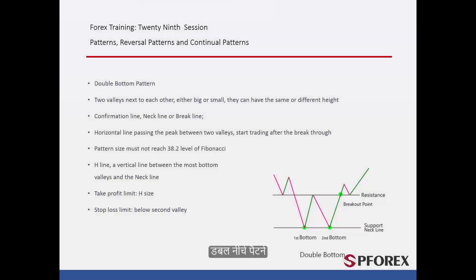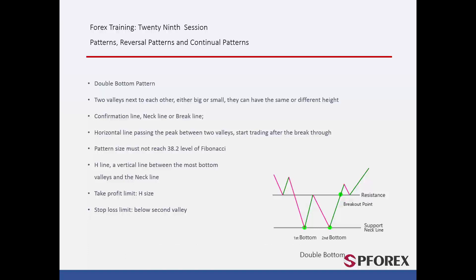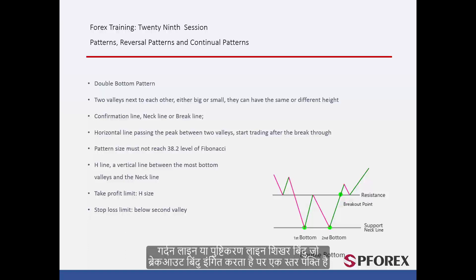Double Bottom Pattern: On a downward trend, a double bottom pattern is formed by two consecutive valleys with different or the same height and width. The neckline or confirmation line is a level line on the peak point, which indicates the breakout point.